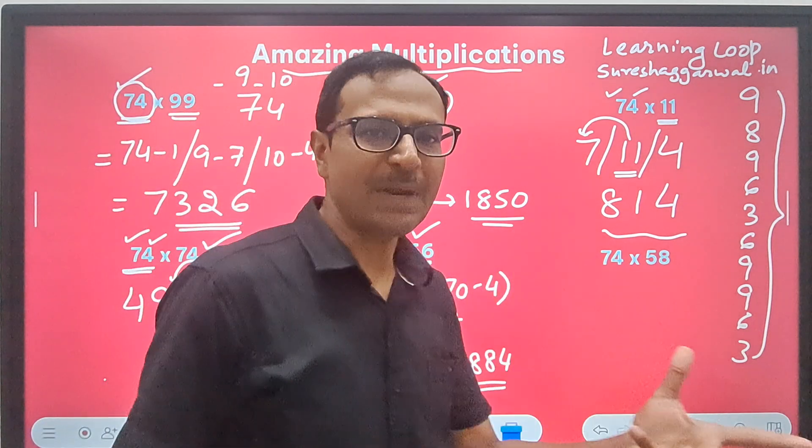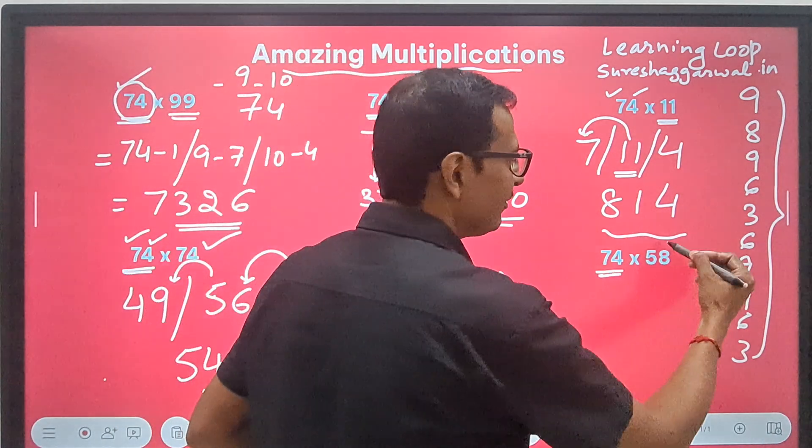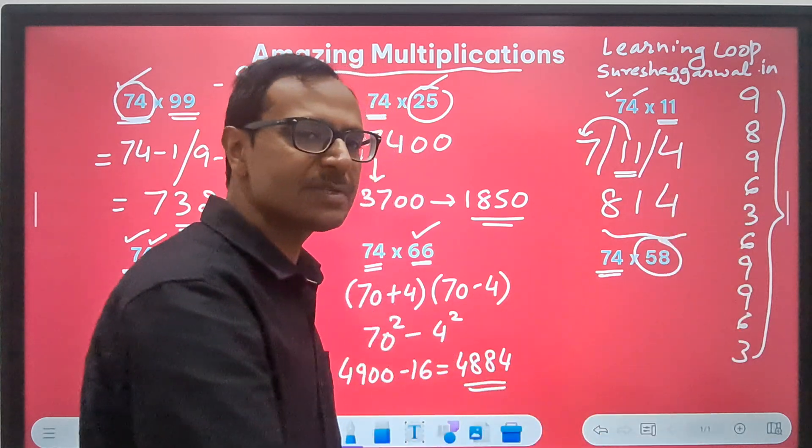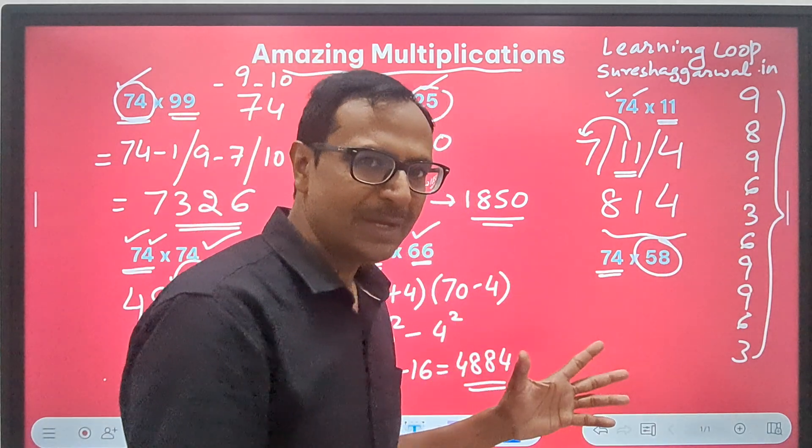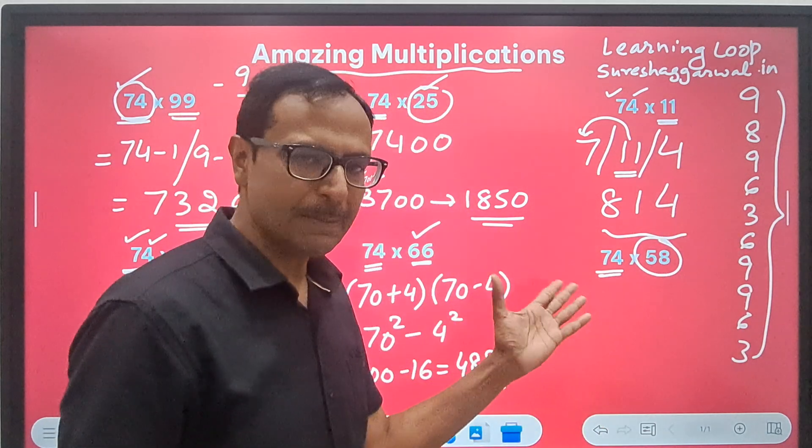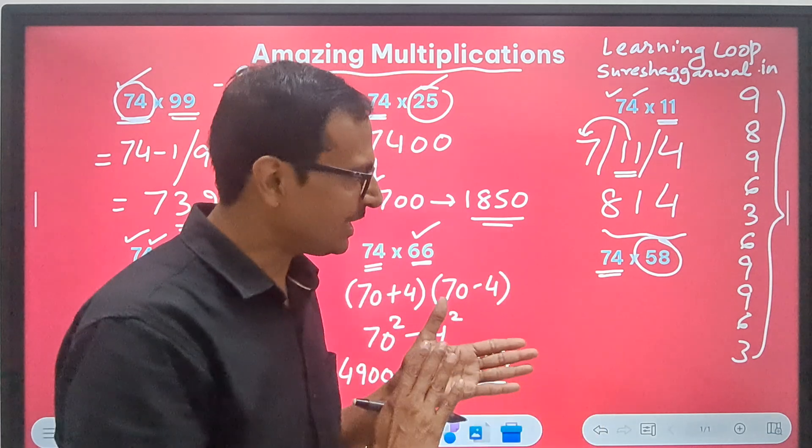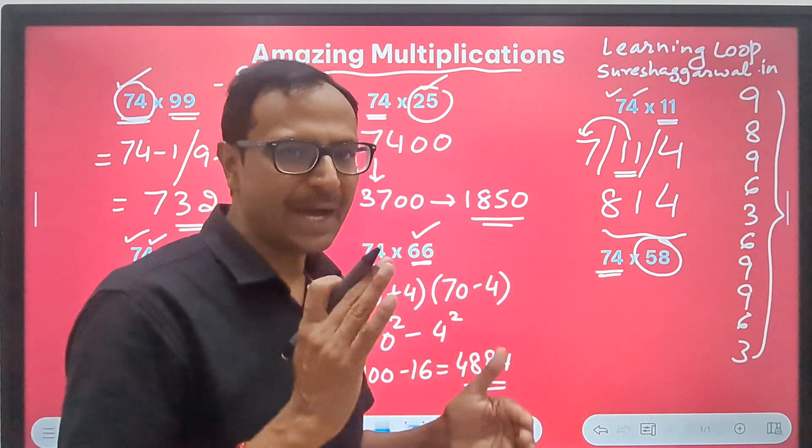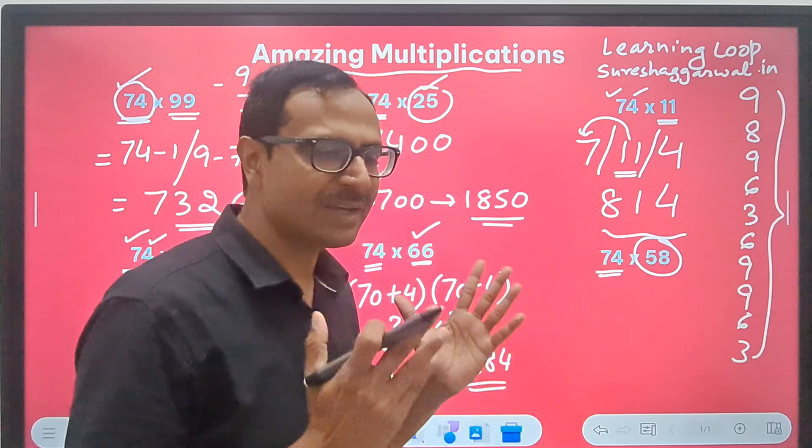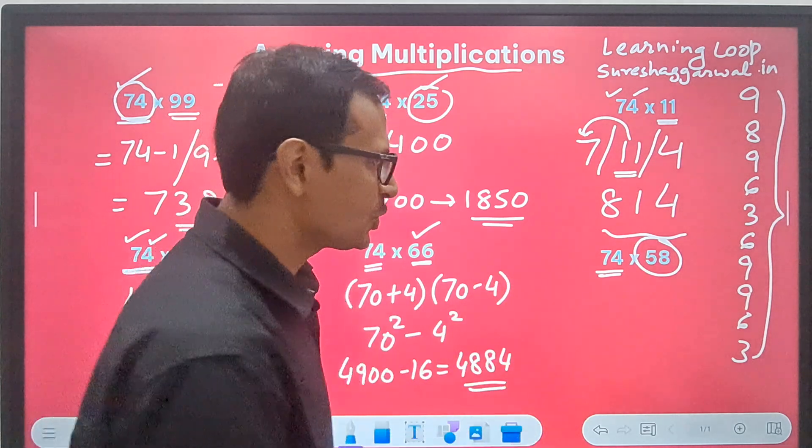And finally, some random numbers. Look at this 74 again and we have a random number 58 which is not a special number. It is a random number by which I have to multiply 74. Right? What works here the best? The vertically and the crosswise or the IXI method or the crisscross method of Vedic maths.